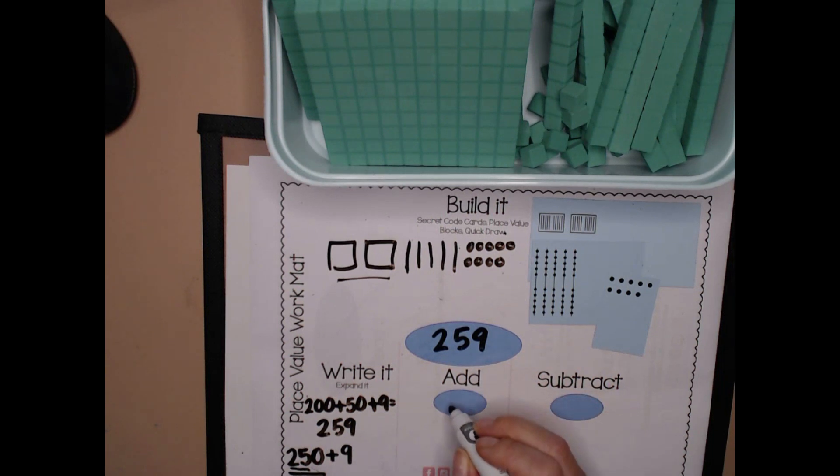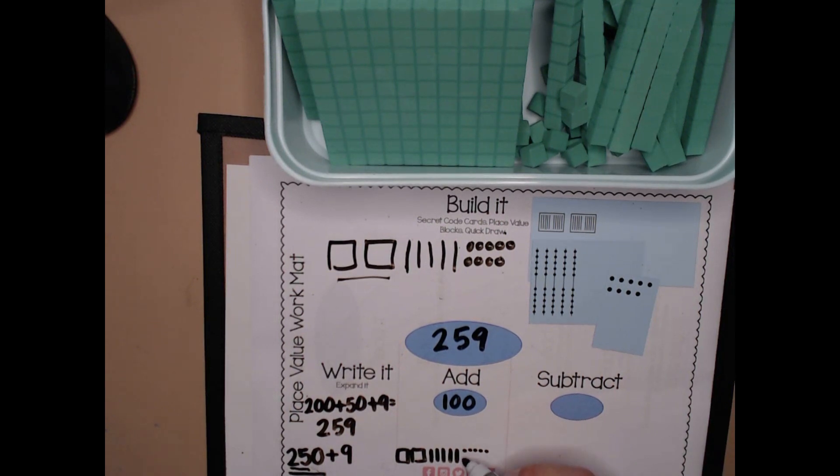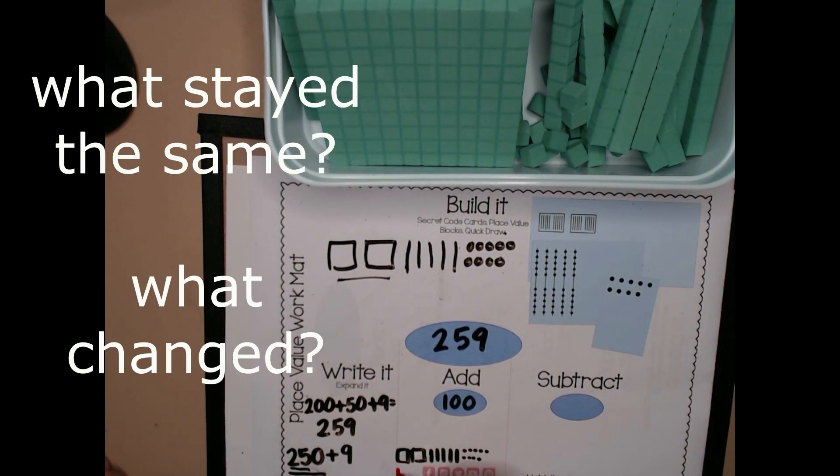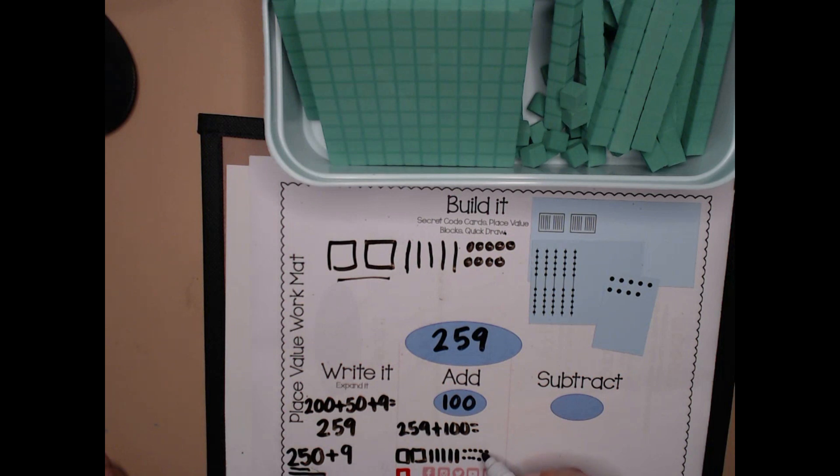Now I want us to add, and today we're going to add 100. If I add 100, I'm always going to start with my proof picture. Let's make our proof picture one more time. 100, 200, 10, 20, 30, 40, 50, 51, 52, 53, 54, 55, 56, 57, 58, 59. And I know that I need to add 100. I'm going to add 100 in a different color so I can tell what was added. I have 259 plus 100. The only thing that changed is the 100. What stayed the same? My 10s and my 1s. Let's count. 100, 200, 300, 10, 20, 30, 40, 50, 350, 1, 2, 3, 4, 5, 6, 7, 8, 9. I have 359.